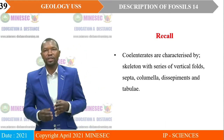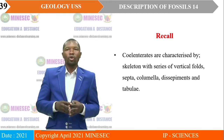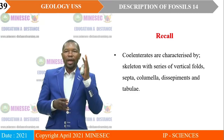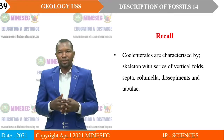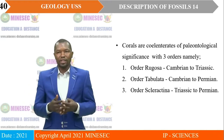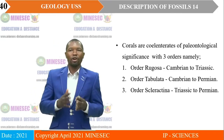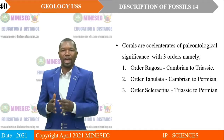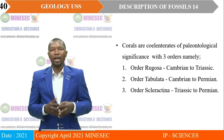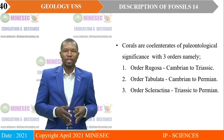Recall that coelenterates are characterized by skeletons with a series of vertical folds. They also have a septum, a columella, dissepiment, as well as tabula. Corals are coelenterates of paleontological significance. We have three orders: Order Rugoza, which ranges from Cambrian to Triassic; Order Tabulata, which ranges from Cambrian to Permian; and Order Sclerotina, which ranges from Triassic to Permian.